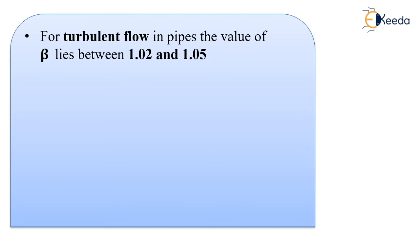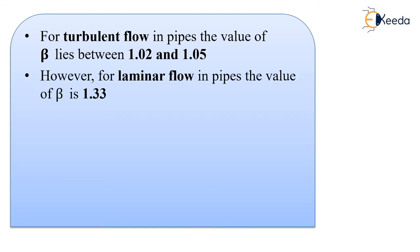For turbulent flow in pipes, the value of beta lies between 1.02 and 1.05. However, for laminar flow in pipes, the value of beta is 1.33.